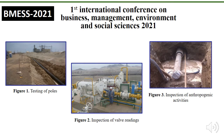Figure 1 shows testing of poles — the revision of the pipeline in the natural gas transmission line in the Chilca district. Figure 2 shows inspection of valve readings — the revision of the pipeline's valves in the natural gas transmission line in the district of Chilca. Figure 3 shows the revision of the pipeline in the natural gas transmission line in the district of Chilca.